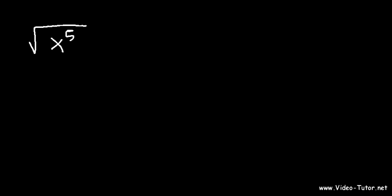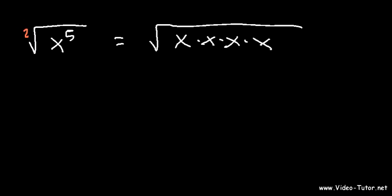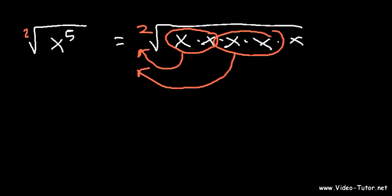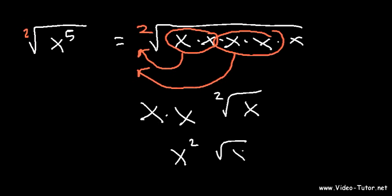In this video, we're going to focus on how to simplify radicals with variables and exponents. So let's say if you want to simplify the square root of x to the fifth. The index number is 2. One way you can do this is you can write x five times, and because there's a 2, you need to take out 2 at a time. So you're going to get x times x, square root of x. This is equal to x squared root x.